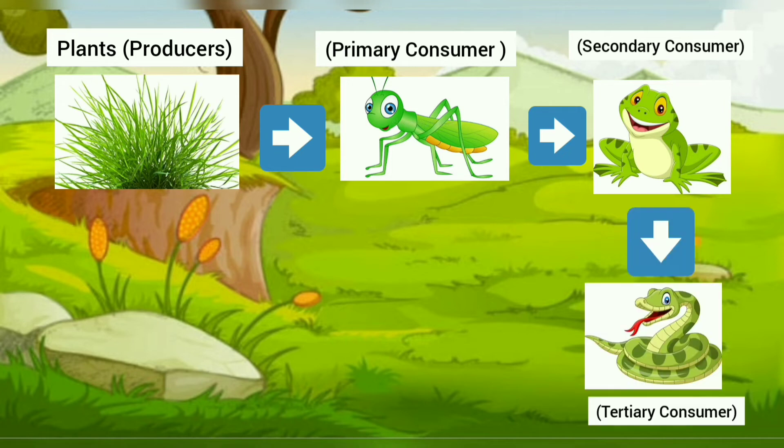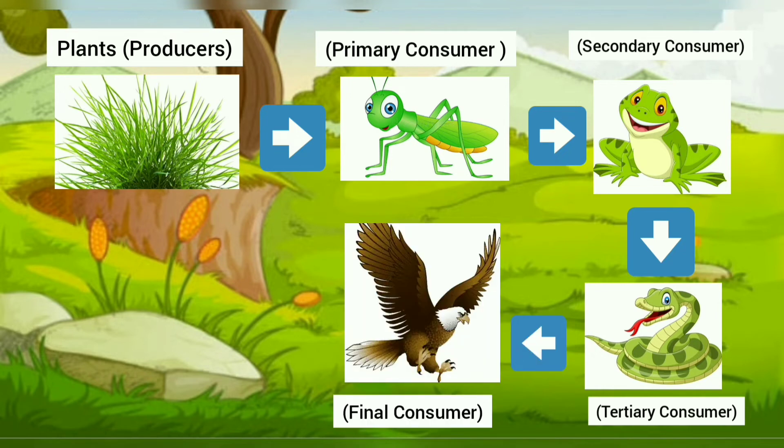The tertiary consumers are also either omnivores or carnivores. But in this example, the snake is an omnivore.